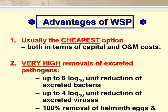Ponds have many advantages. They are usually the cheapest, both to construct and to operate and maintain. They can achieve very high removals of excreted pathogens — for example, up to a 6 log unit reduction of excreted bacteria. That's a removal of 99.9999%, with each of these 9s being a significant figure. Up to a 4 log unit reduction of excreted viruses, a 100% removal of helminth eggs, and generally over 90% removal of protozoan cysts and oocysts.